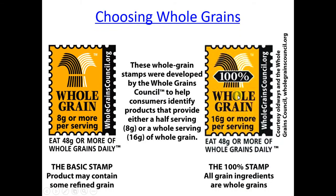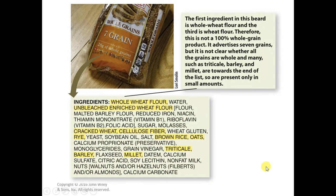So you want to choose whole grains. You can look for the whole grain stamp, but you can also learn to read your ingredients. The first ingredient should be whole wheat. 'Enriched wheat flour' is that refined, inferior flour with a few vitamins and minerals thrown in.